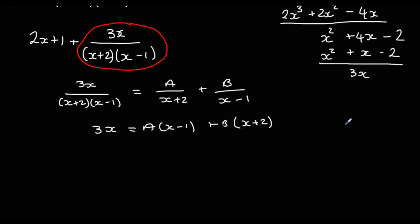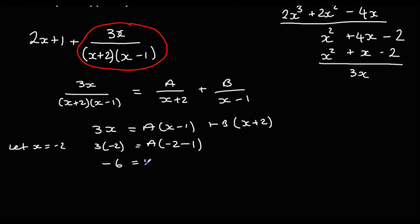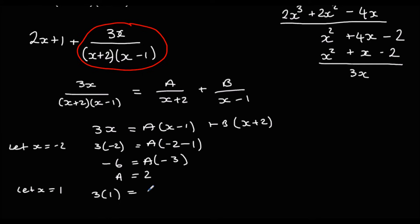We multiply through by the denominator: 3x = A(x − 1) + B(x + 2). We eliminate B by letting x equal negative 2: 3(−2) = A(−2 − 1), giving −6 = −3A, so A is 2. We eliminate A by letting x equal 1: 3(1) = B(1 + 2), giving 3 = 3B, so B is 1.